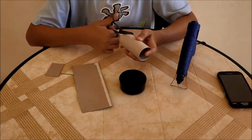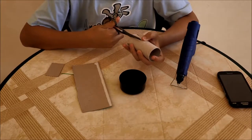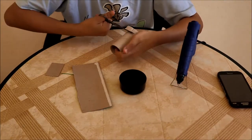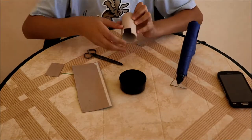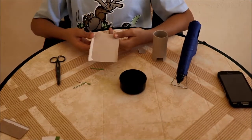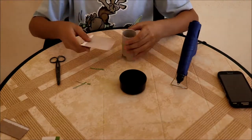You have to cut a small square along the tube like this. Now we have to cut a rectangle out of this piece of cardboard that will fit inside the toilet roll.